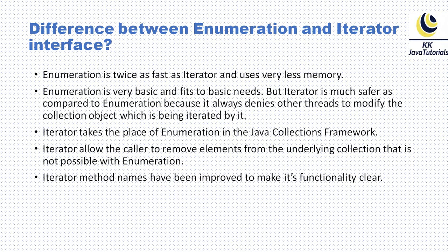Iterator method names have been improved, making functionality clearer. If you look at the Enumeration interface, it has two methods: hasMoreElements and nextElement. But in the Iterator interface, there are four methods: hasNext, next, remove, and — added in Java 8 — forEachRemaining. By looking at the names themselves, everything is very clear for every developer.